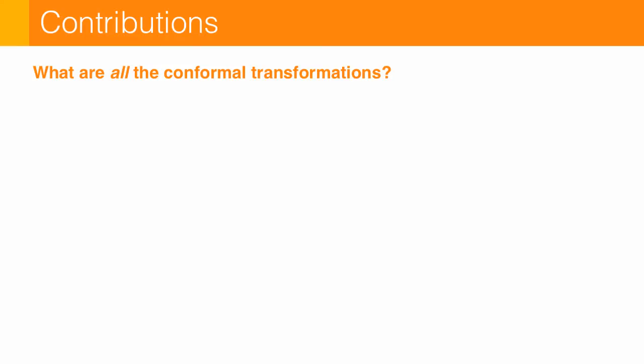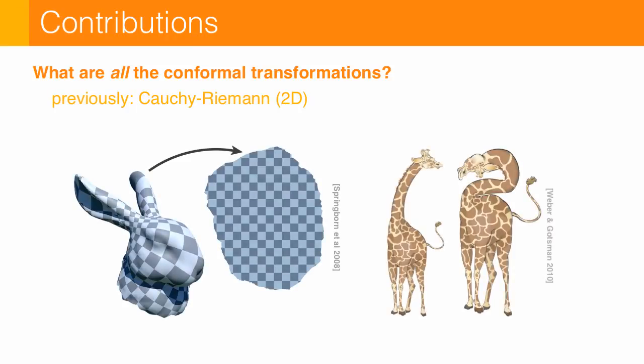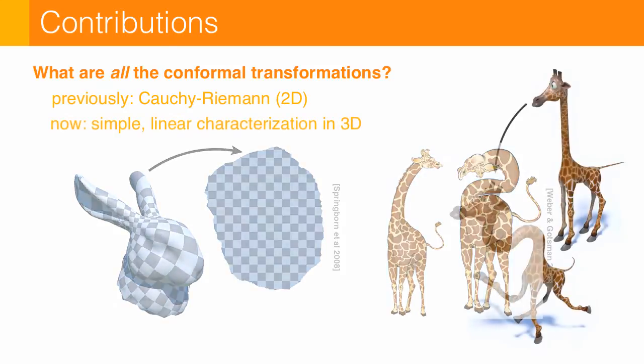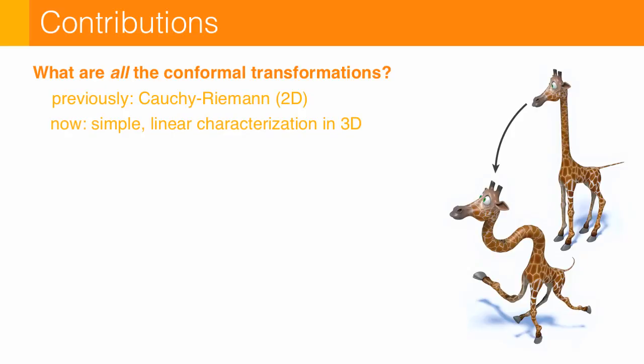So in the past we could talk about maps into the flat 2D plane, which is useful for things like surface parameterization and planar shape deformation, where the result is completely flat. Whereas now we have a nice characterization that also works in three dimensions, which means we can start to solve all sorts of geometry processing problems.